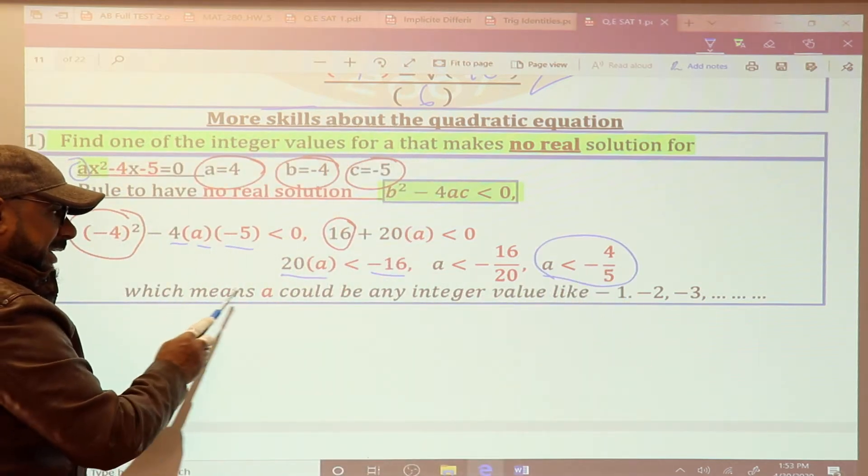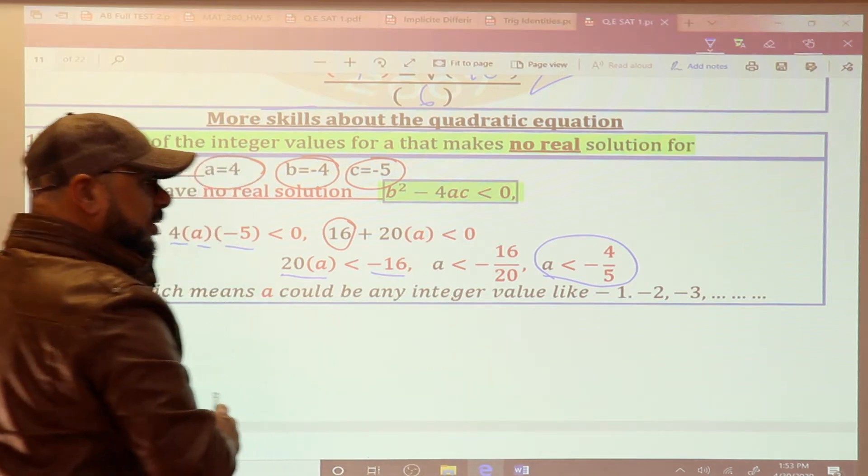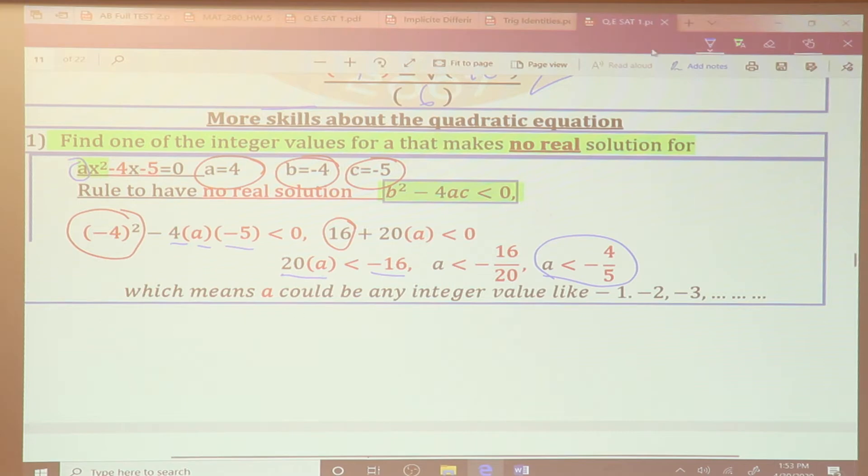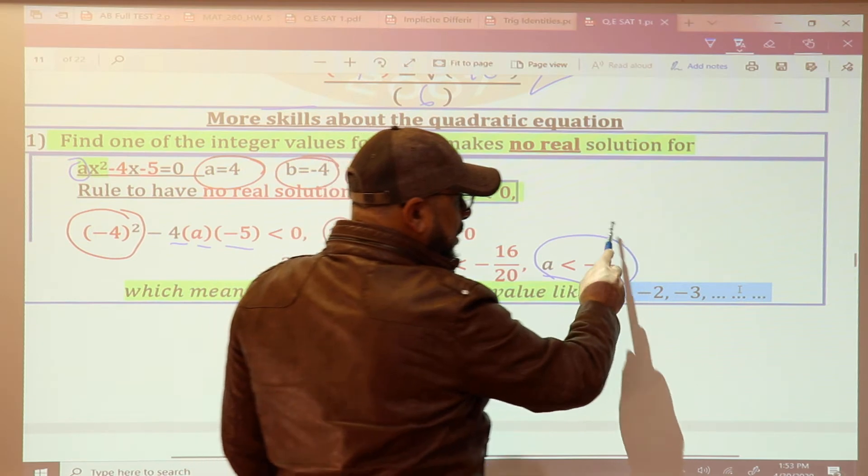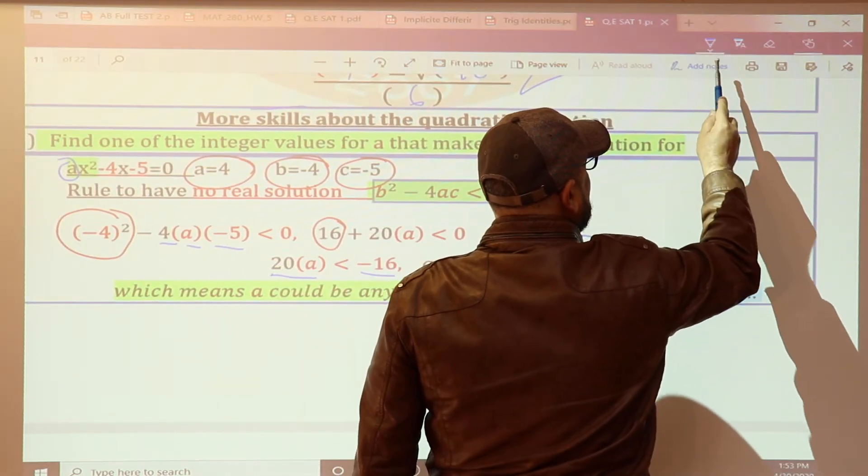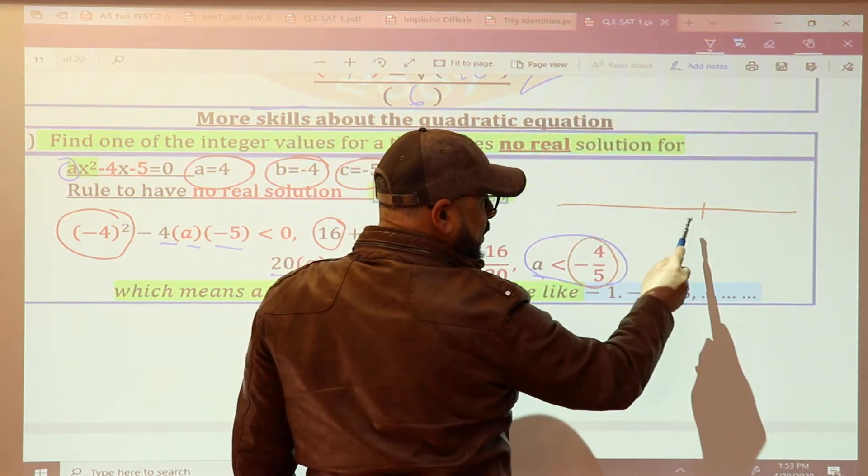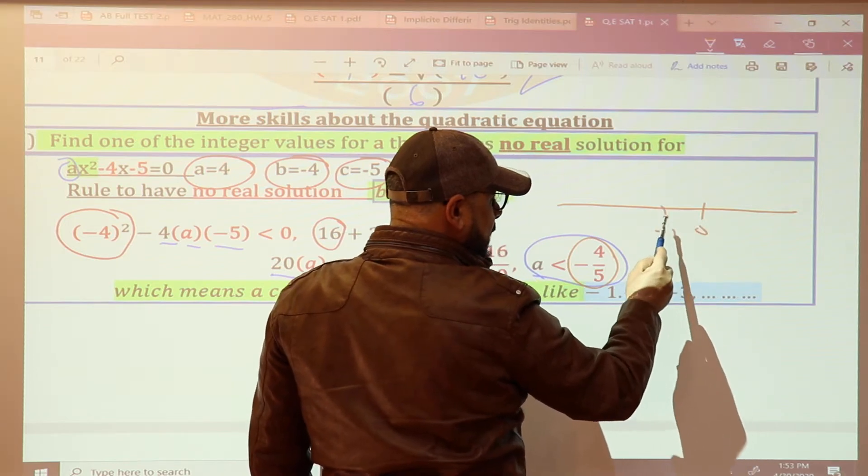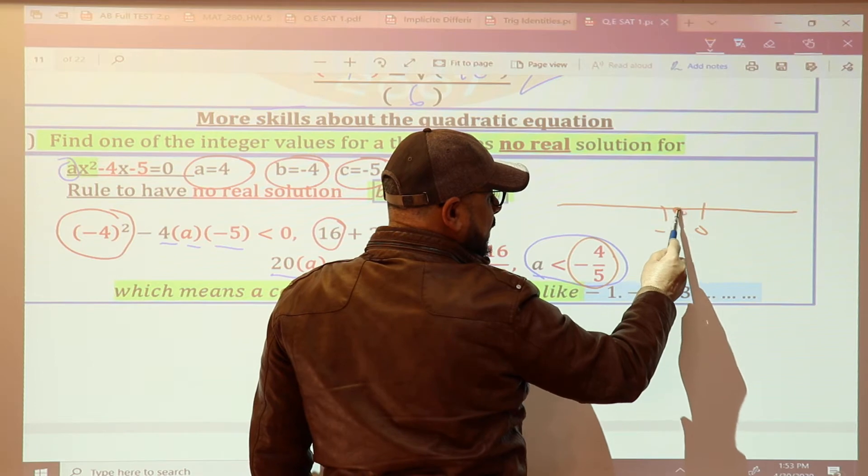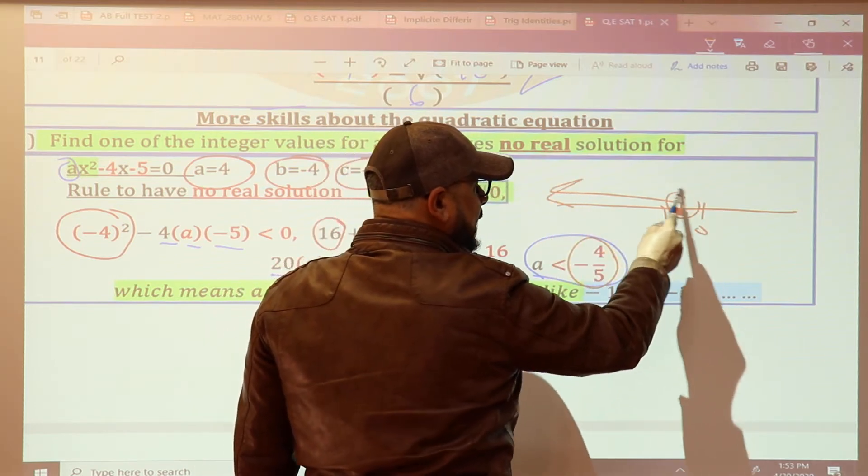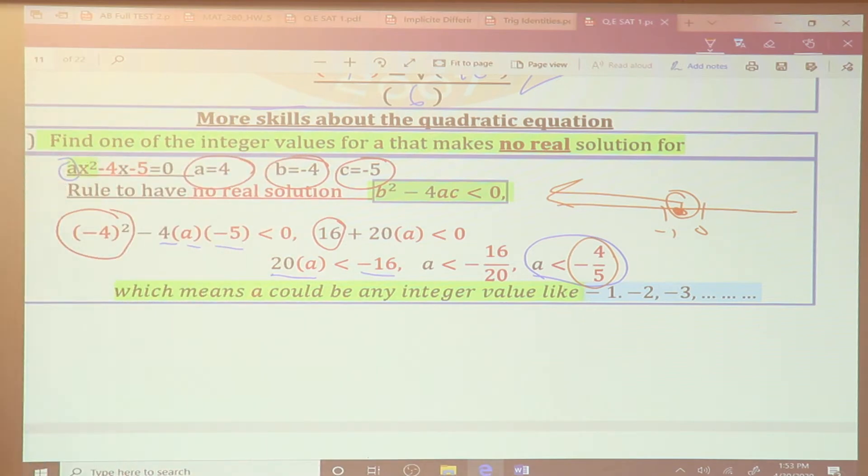Which means A could be any integer value like what? Anything less than negative 4 over 5, like these values, right? Negative 1, negative 2, negative 3. How is this? You do a number line. Look, we have too many concepts here. Here, what we have: the number line, and this is negative 4 over 5. This is 0, this is negative 1, and negative 4 over 5 is here. Then you are to the left, but this guy is not included. The negative 4 over 5 is not included.